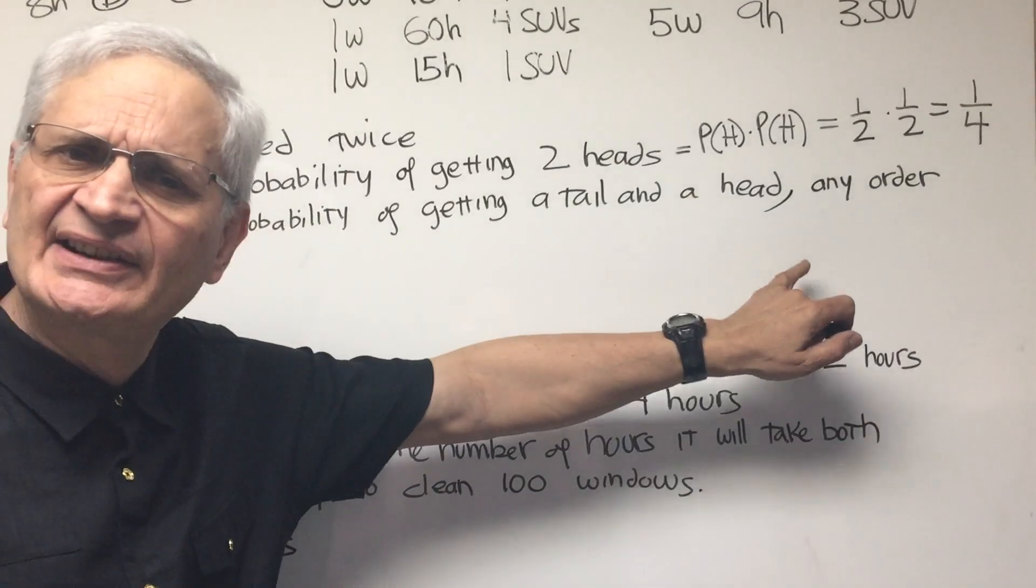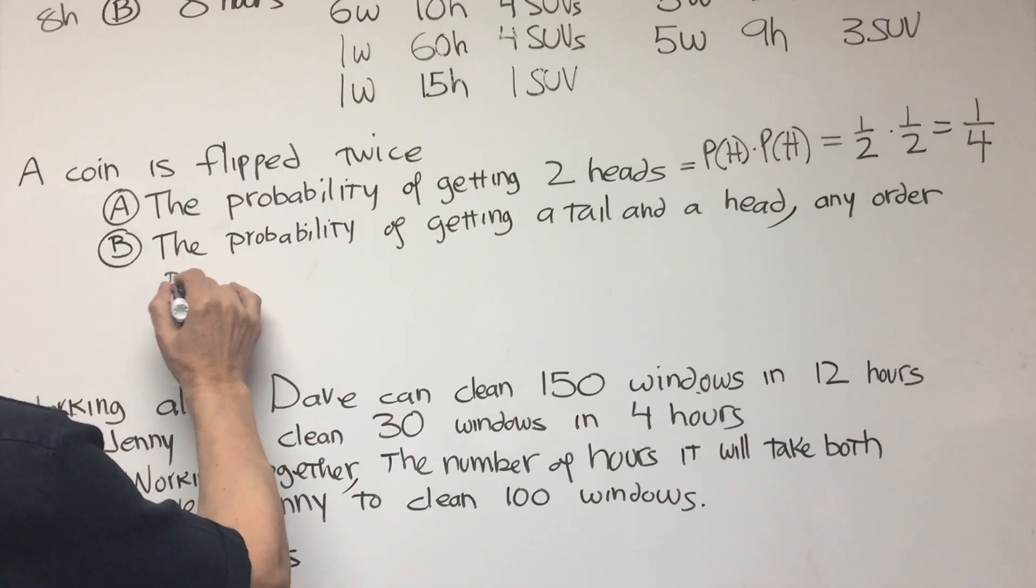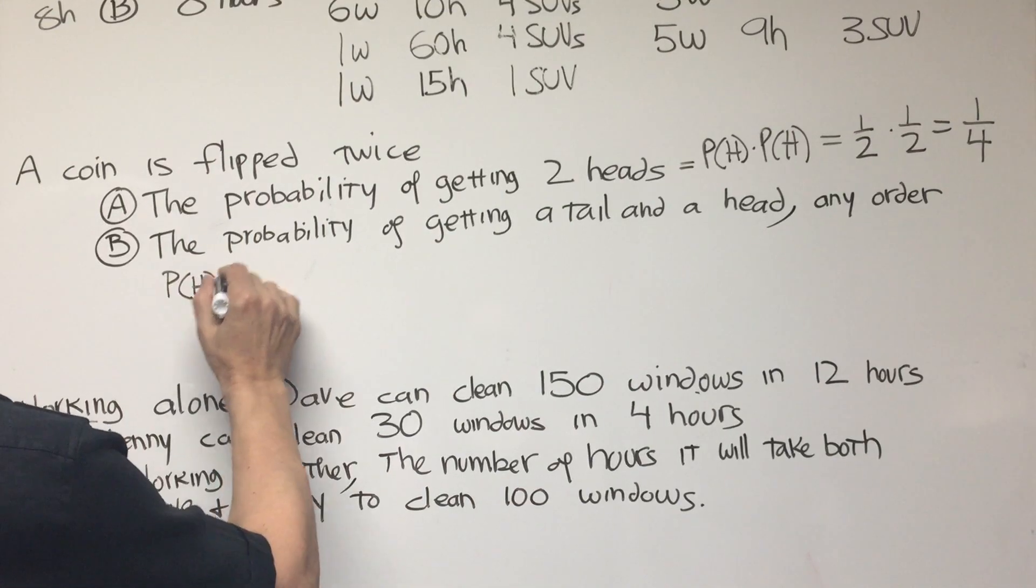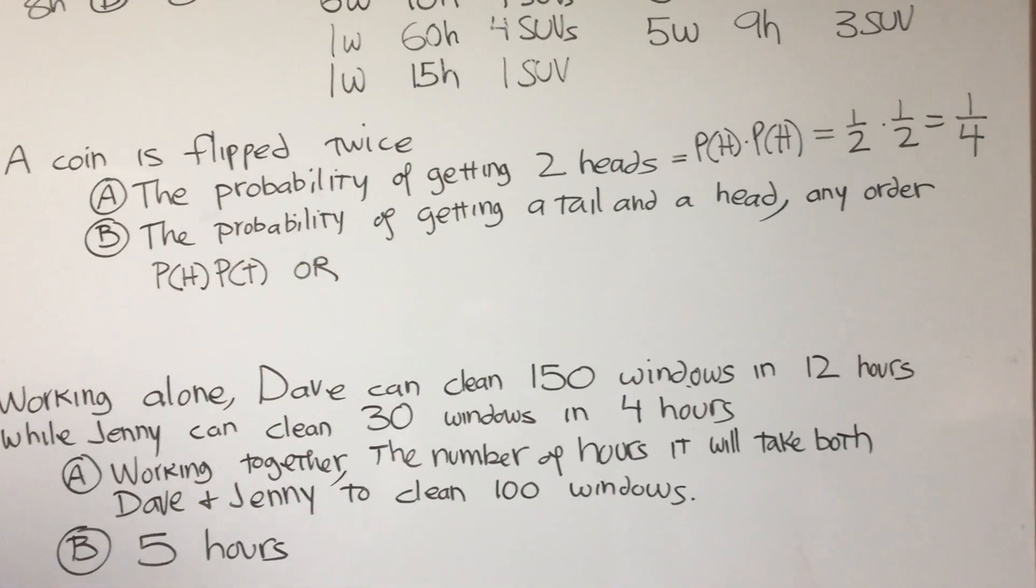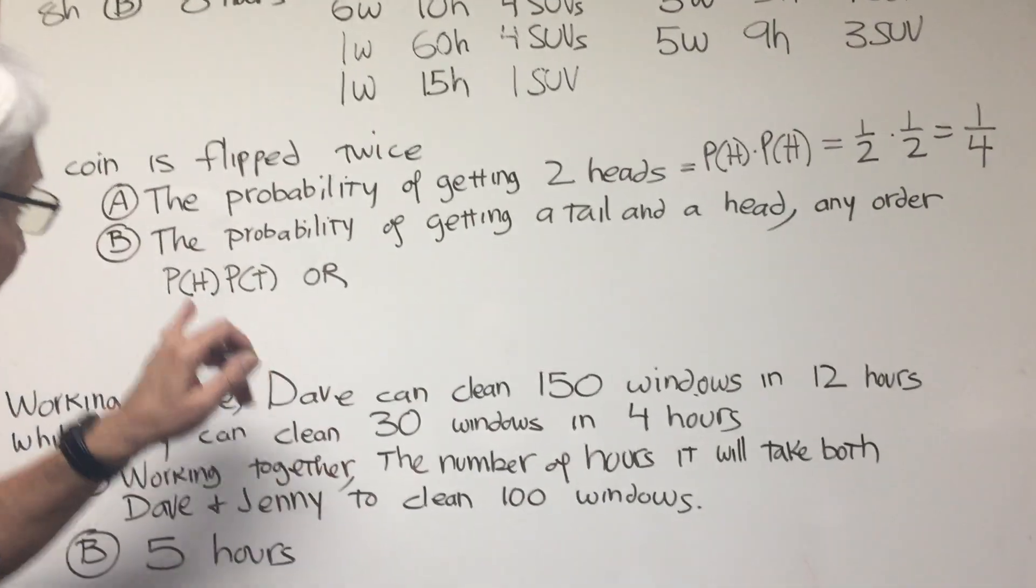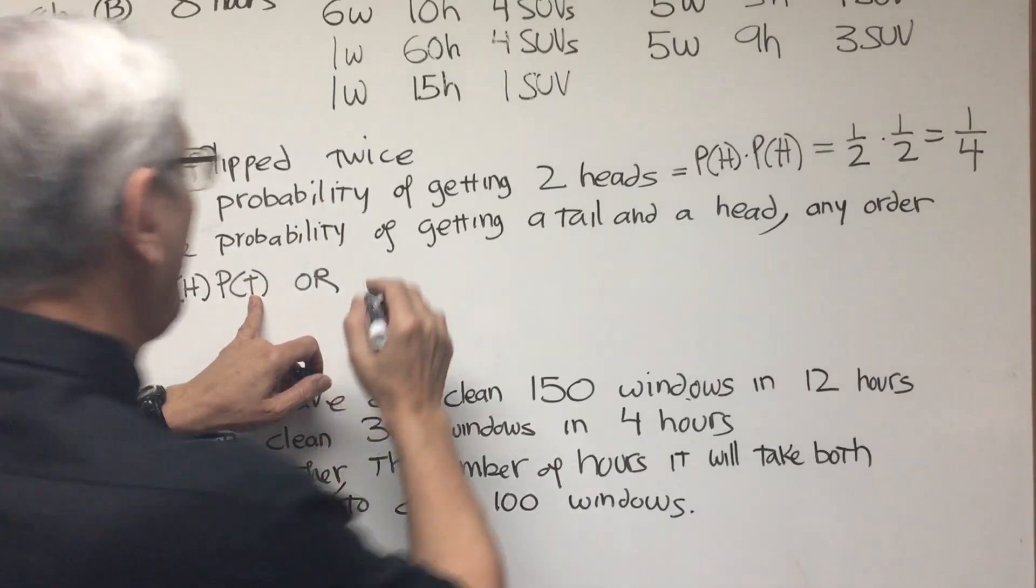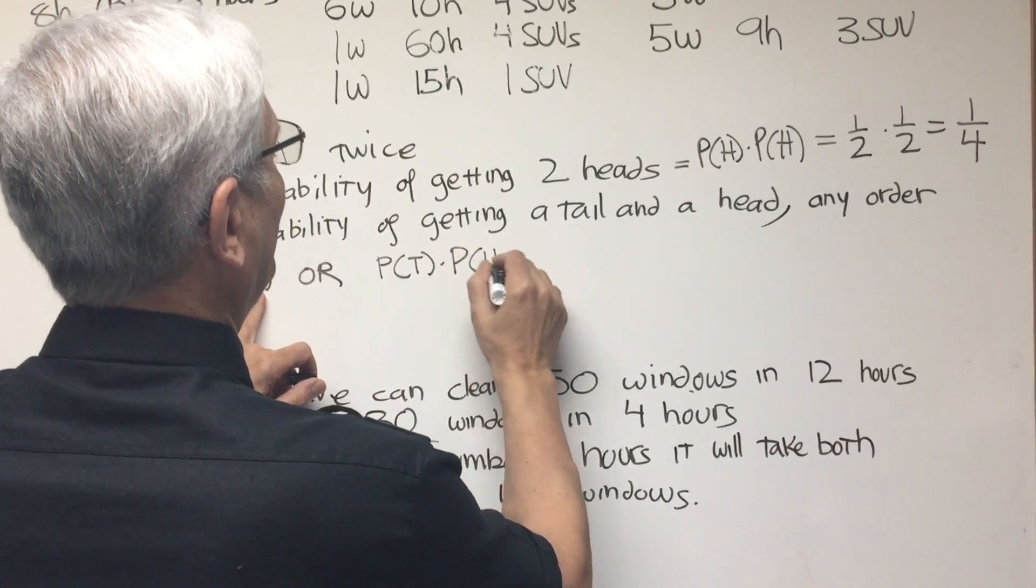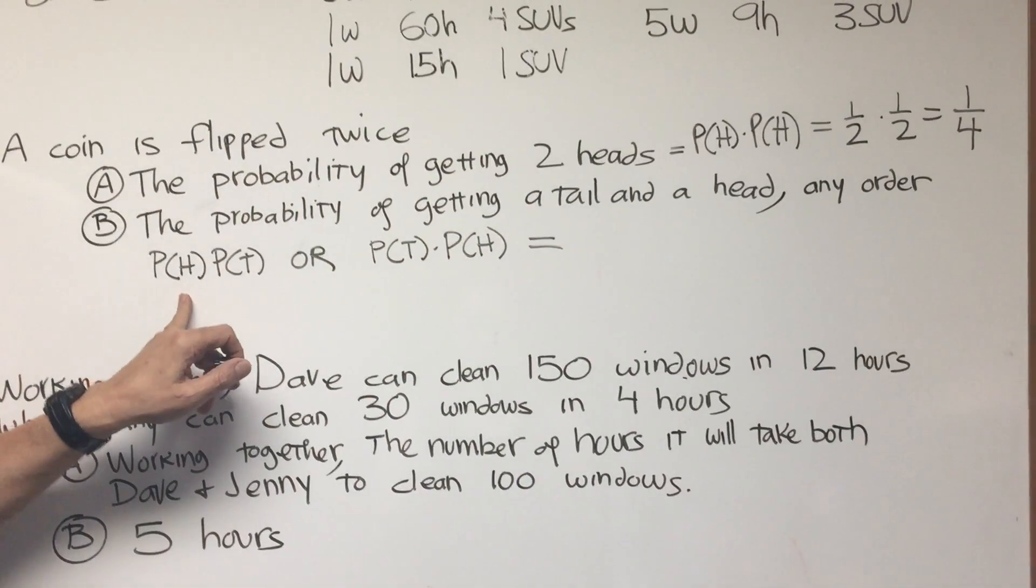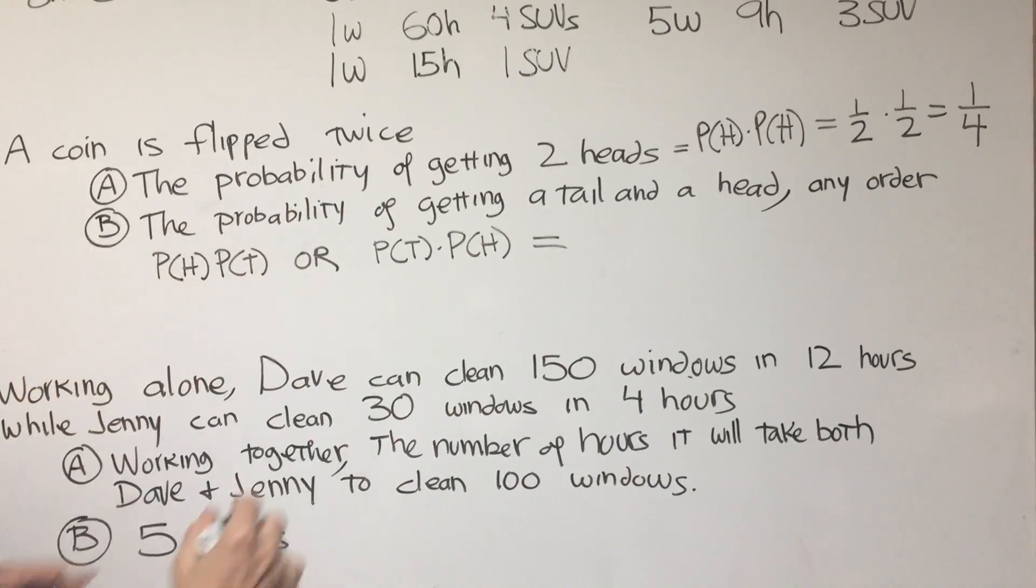Okay, what about this? Getting a tail and a head in any order. All right, that means we want to get a probability of a head and a probability of a tail, or we have to consider two possibilities. That the head comes first and then the tail, or the tail comes first and then the head. All right, so the probability of heads times the probability of tails, that's going to be one-half times one-half.